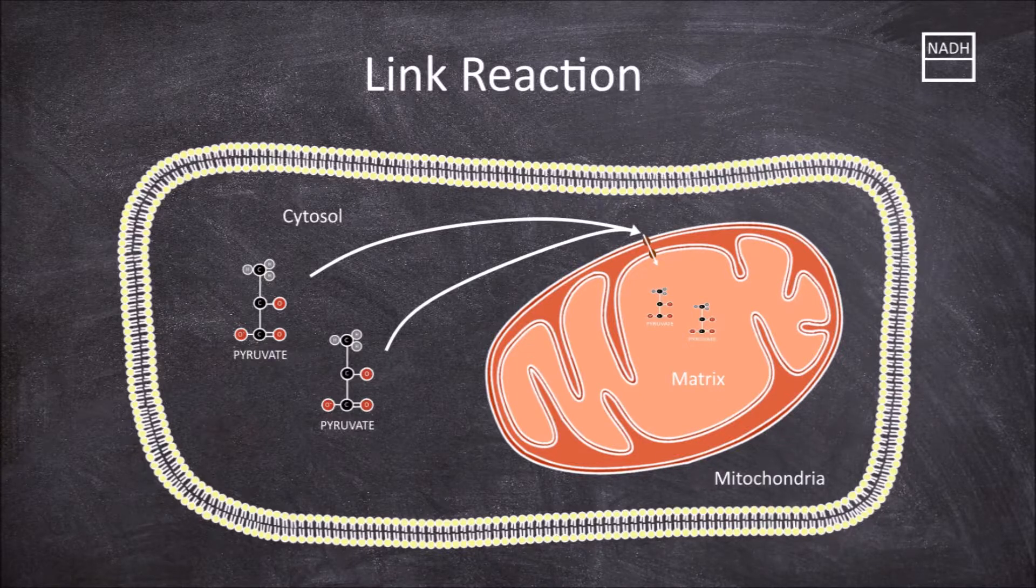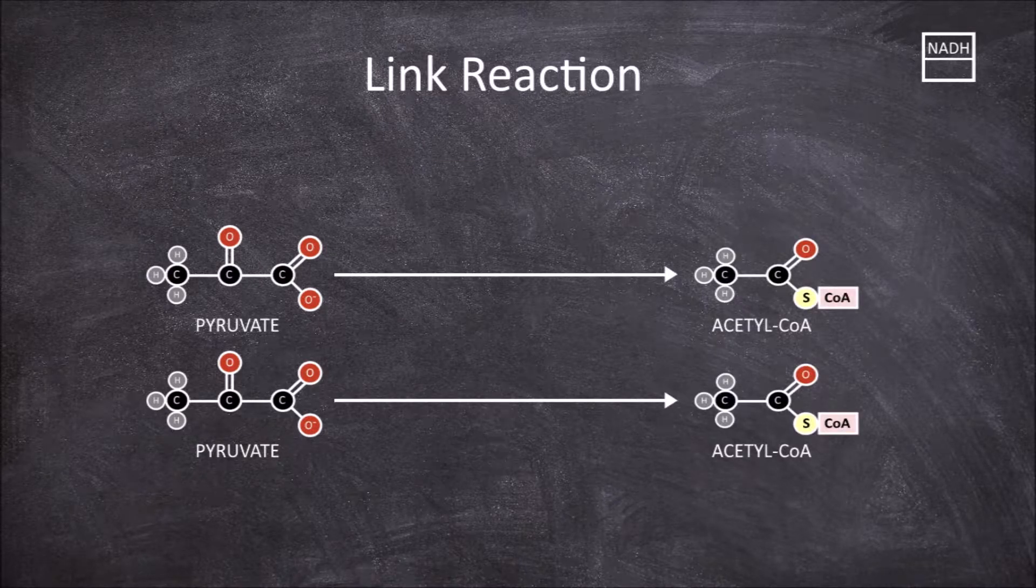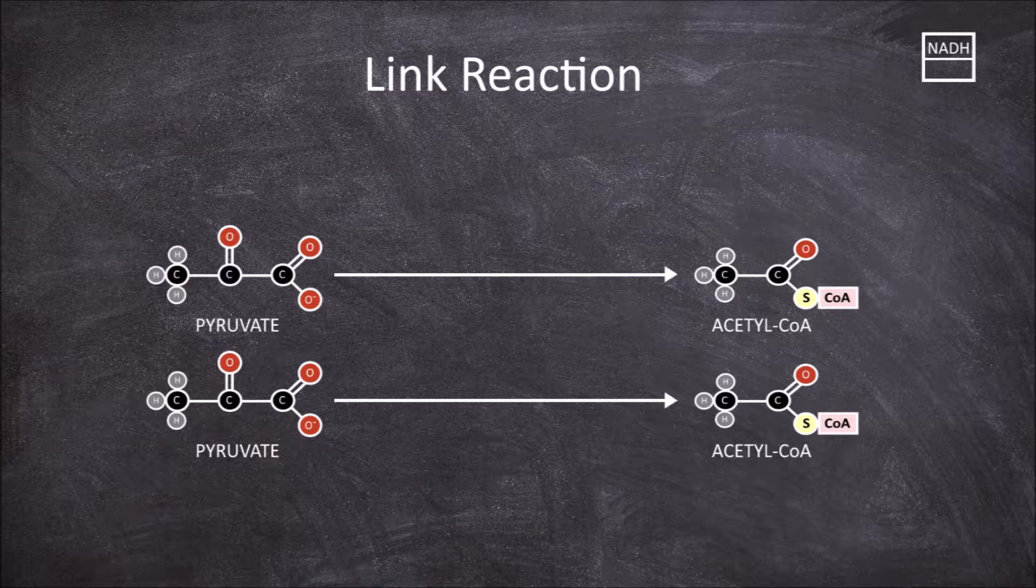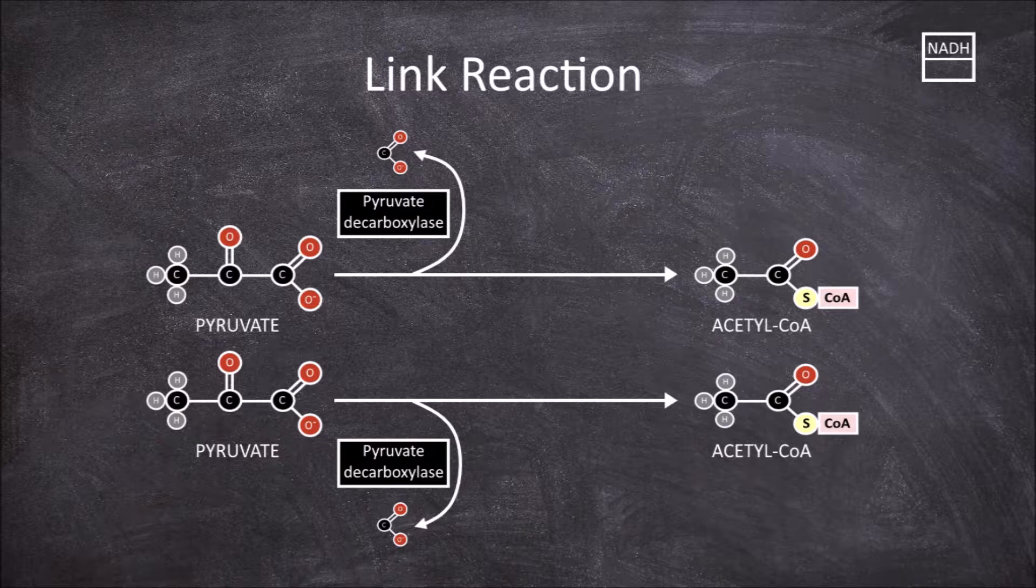Within the matrix, each 3-carbon pyruvate molecule is converted into 2-carbon acetyl-CoA. The enzyme pyruvate decarboxylase removes a carbon dioxide, making it now a 2-carbon molecule.